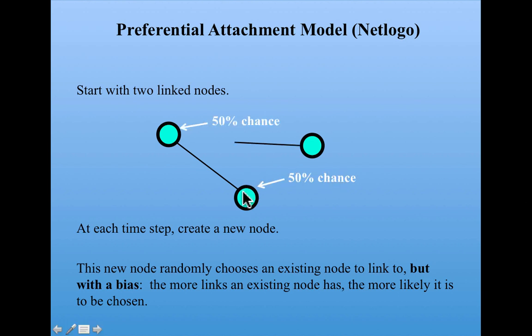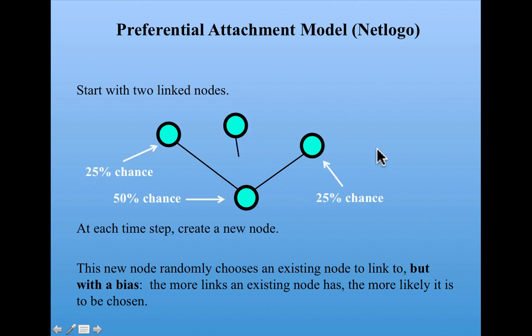For example, each one of these existing nodes has one link coming out of it. And so each has an equal chance here of being linked to by this node. So let's say that this node randomly chooses this other node to link to. Okay, at the next time step, we have a new node. And it has a choice to make. But this node in the middle here has two links coming out of it, whereas each of these other nodes has one link. So the nodes with one link only have a 25% chance of being picked, whereas the node with two links has a 50% chance of being picked. And here, this node picked it. And this continues.